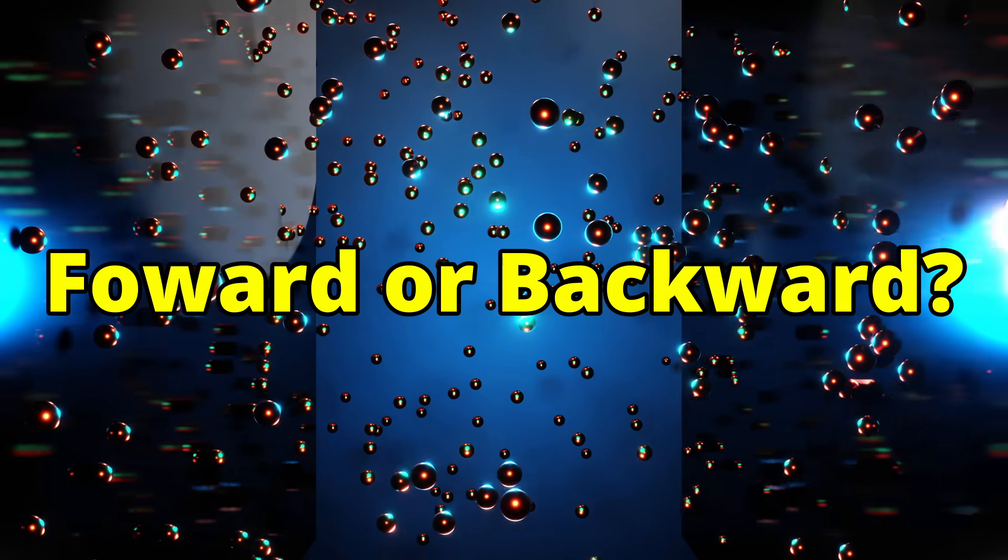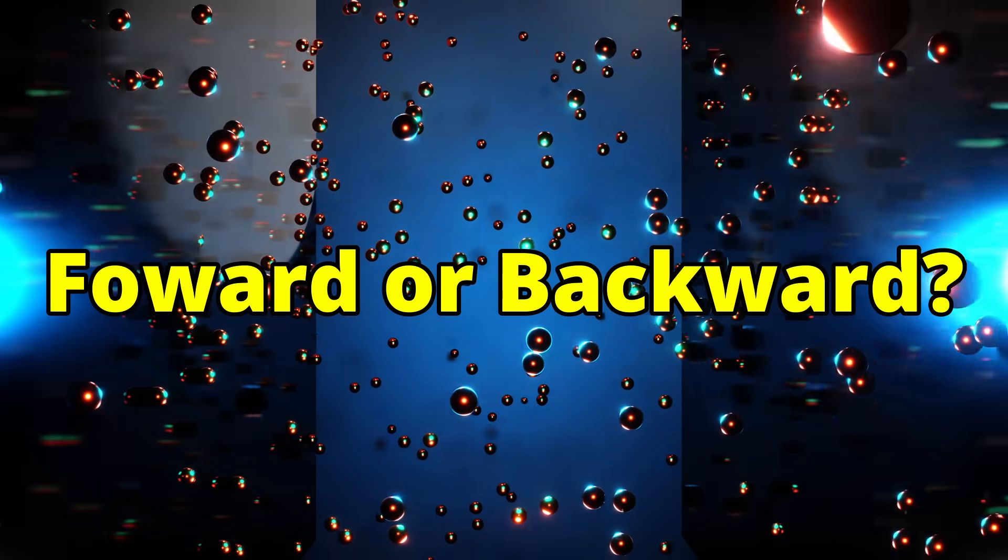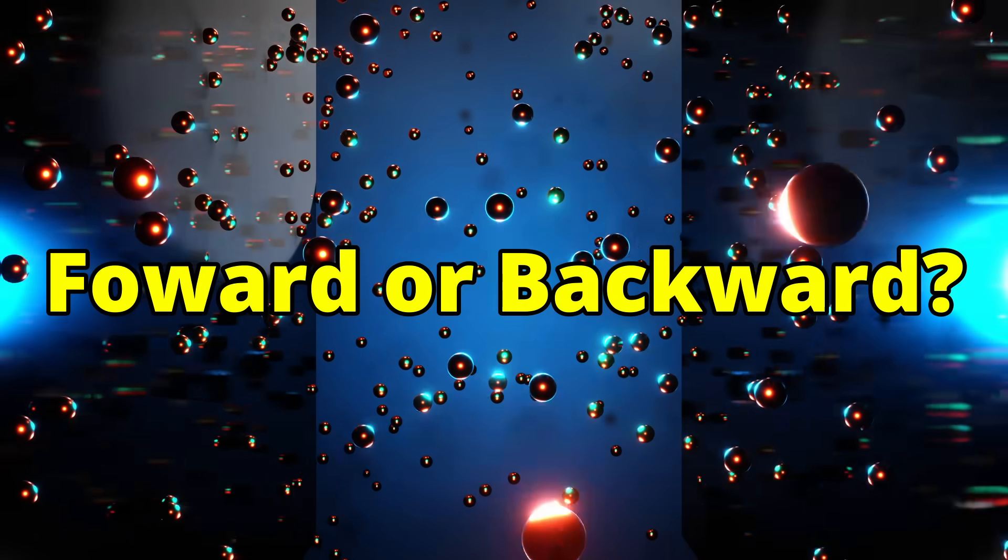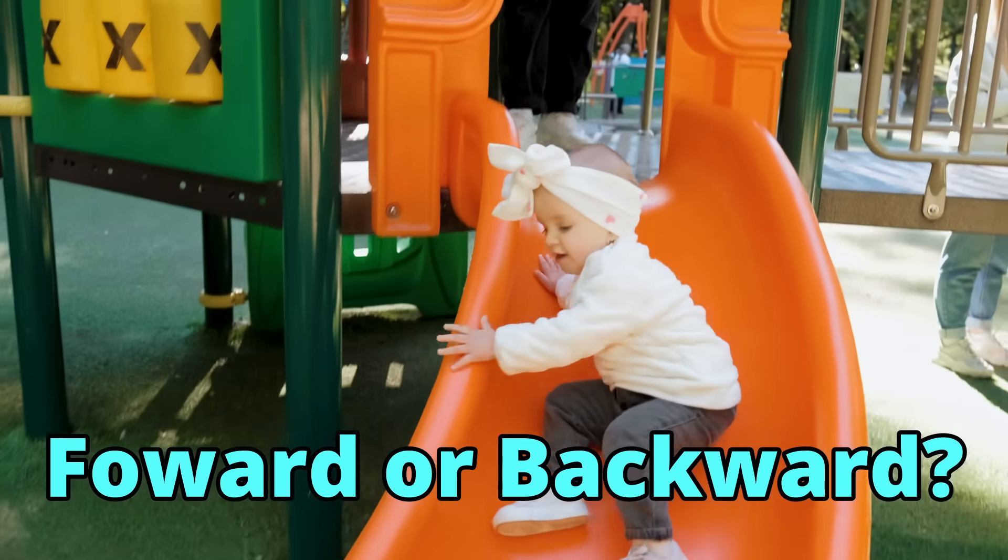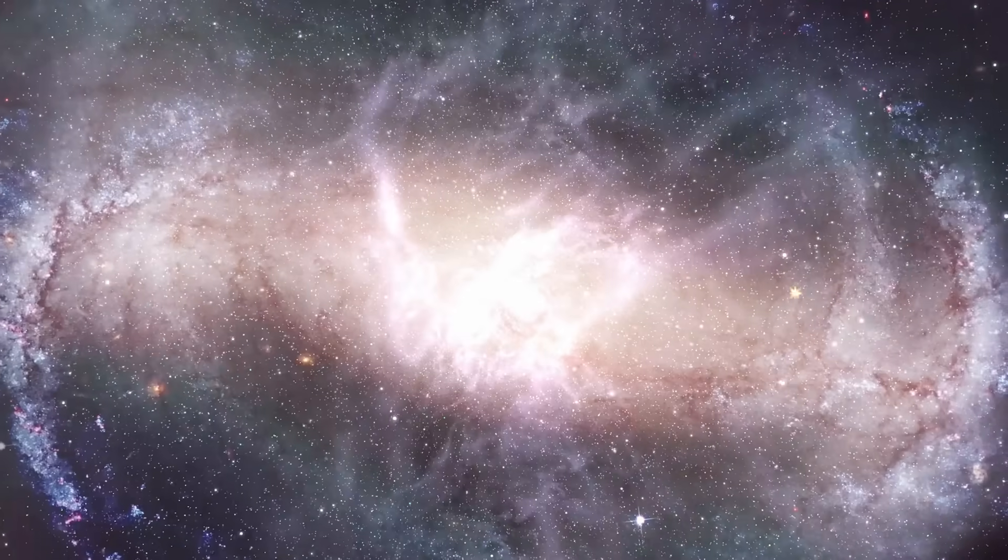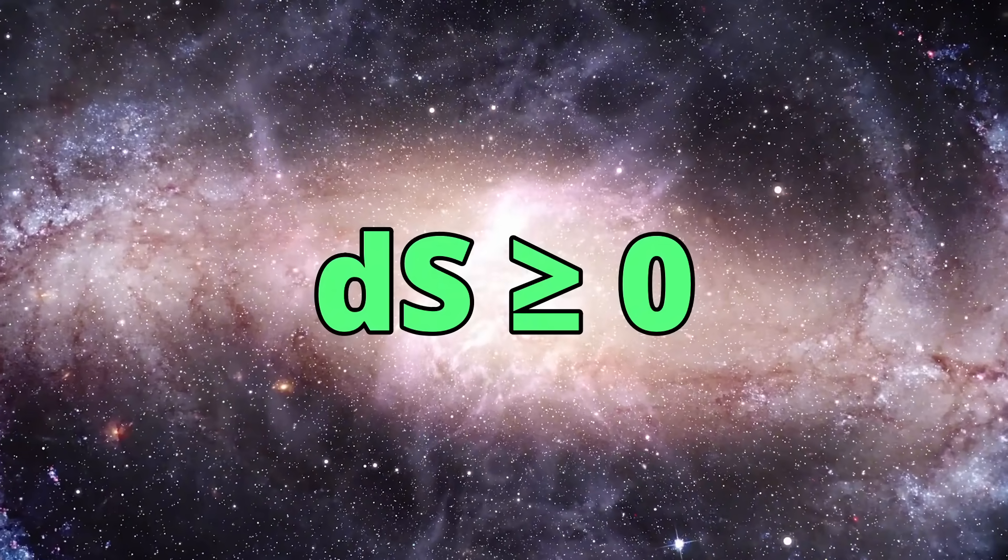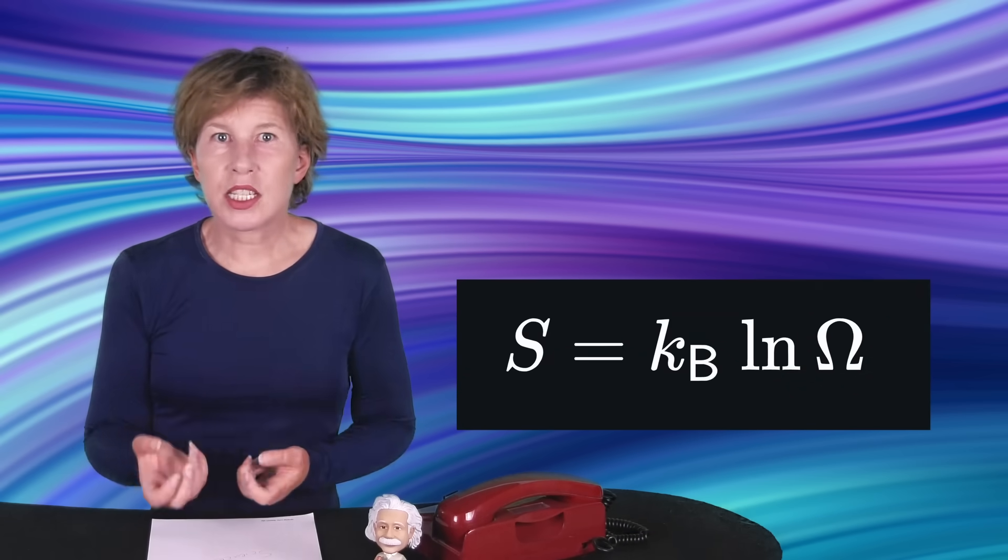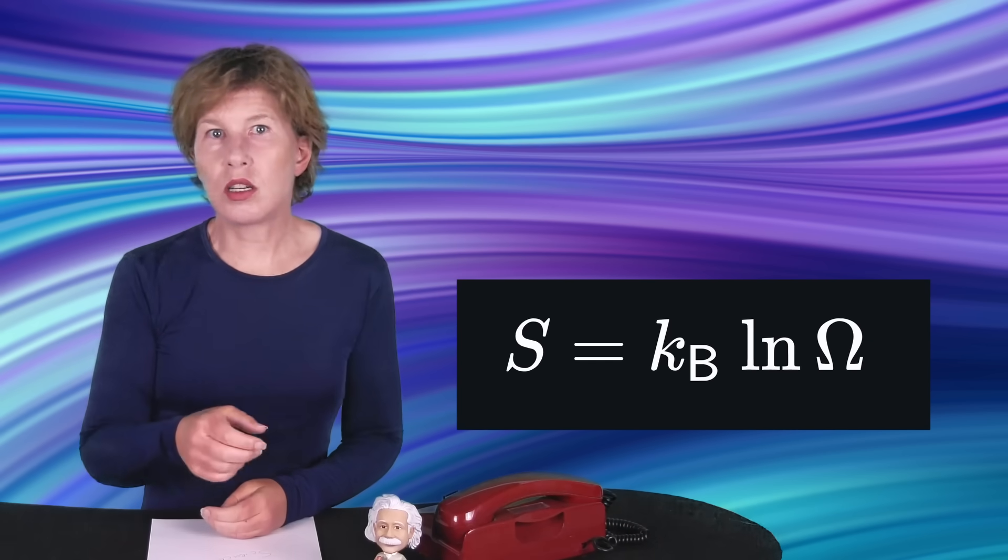This question is closely related to 3. The arrow of time. The fundamental laws of nature that physicists have discovered so far work forward in time the same as backward in time. Yet in our everyday life, forward in time and backward in time can be clearly distinguished. Physicists will usually explain this is because for whatever reason our universe started out in a state of very low entropy and ever since then entropy has just increased.